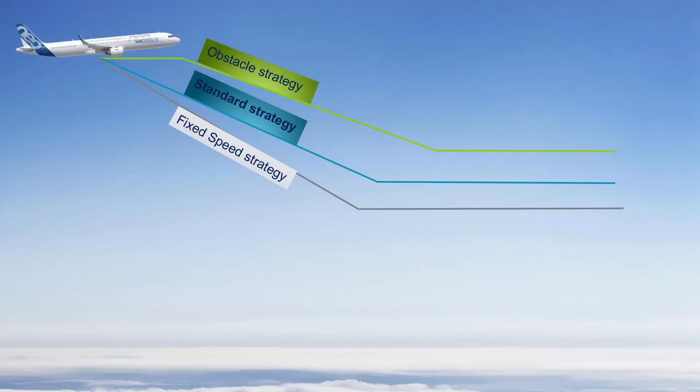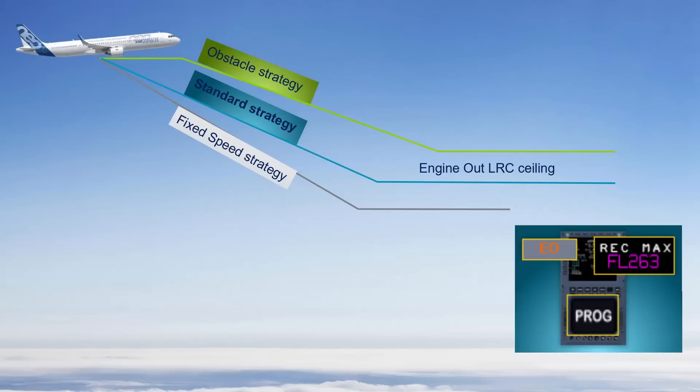During the flight preparation, you can review the descent strategy to adopt in the event of an engine failure. In the case of an engine failure during cruise, you may have to descend to the one-engine inoperative ceiling using one of the three following strategies: the standard strategy, the obstacle strategy, or the fixed speed strategy. The one-engine inoperative ceiling depends on the strategy. The MAX for one engine out on the PROC or PERF page, depending on the aircraft type, is the long-range cruise LRC ceiling with one engine inoperative, corresponding to the standard strategy at long-range cruise speed.